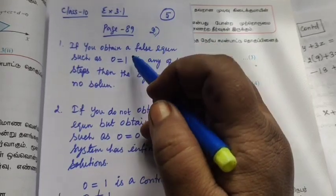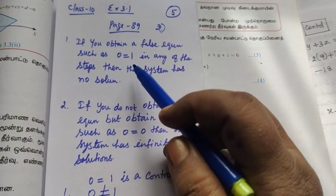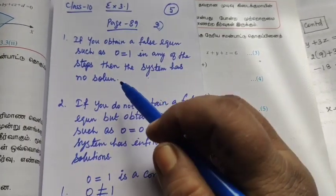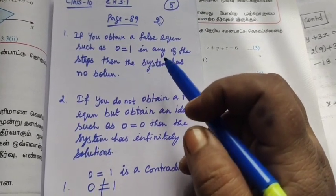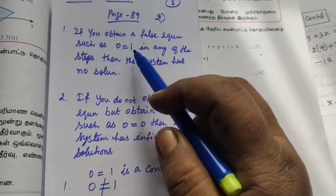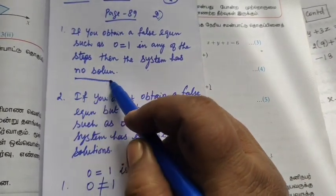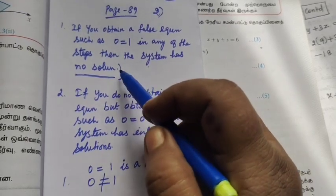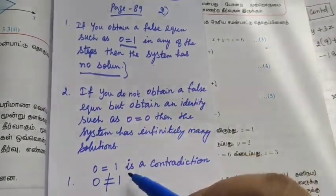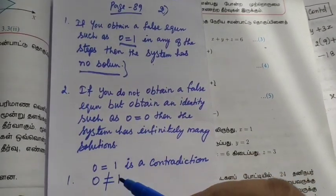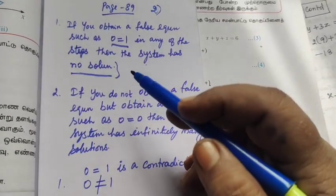If you have obtained a false equation such as 0 equal to 1 in any of the steps, then the system has no solution. 0 equal to 1 is a contradiction. Therefore, no solution.